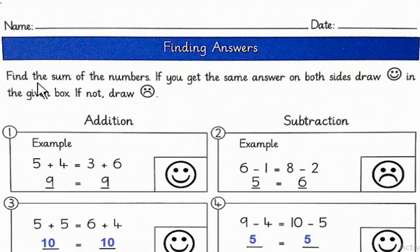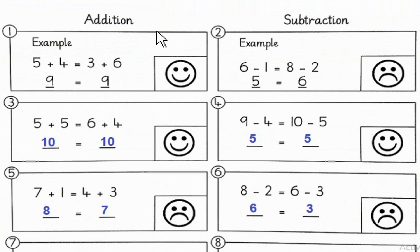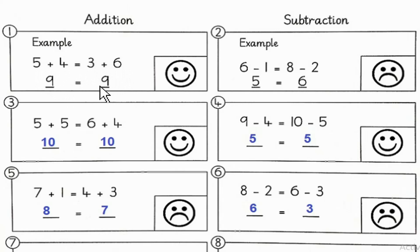Finding answers: Find the sum of the numbers. If you get the same answer on both sides, draw a happy face in the given box. If not, draw a sad face. Addition and subtraction. Number 1 is an example: 5 plus 4 is equal to 9, and 3 plus 6 is also equal to 9. So 9 equals 9 — they are the same, so draw a happy face.